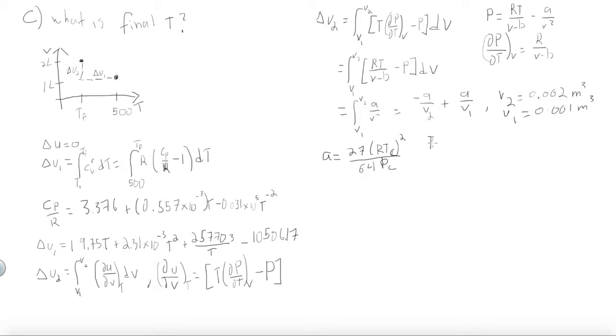And we know the critical temperature, which is 132.9 Kelvin, and the critical pressure, which is 34.96 times 10 to the 5th Pascal. Solving this, we get that the constant A is equal to 0.147.